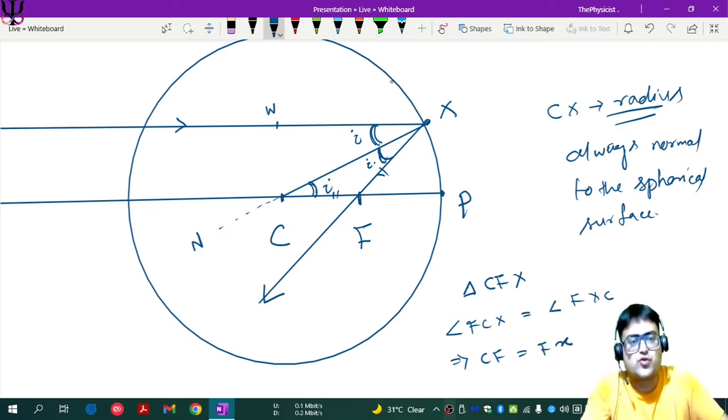And this holds true for any point on the sphere. For any point Y, what will happen? If you draw another parallel ray coming here, getting incident will ultimately pass through the focus. Because whatever angle, then you draw a line CY and that angle could be theta, any angle theta. So basically in that case also you will find eventually that CF is the same as FY.